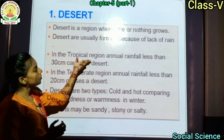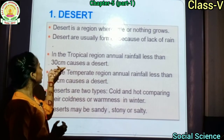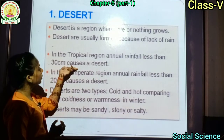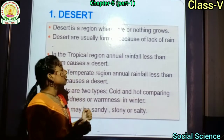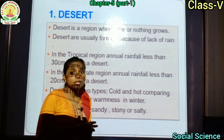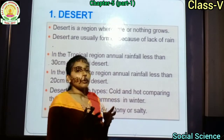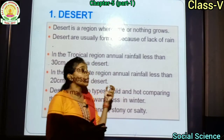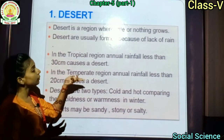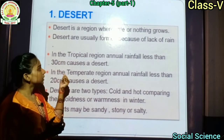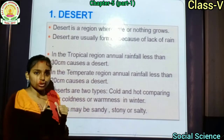In the tropical region, annual rainfall less than 30 cm causes a desert. यानि कि जो tropical region होता है, वहाँ पर rainfall की कमी होती है — 30 cm से भी कम — जिसके कारण उस region में desert form होता है.